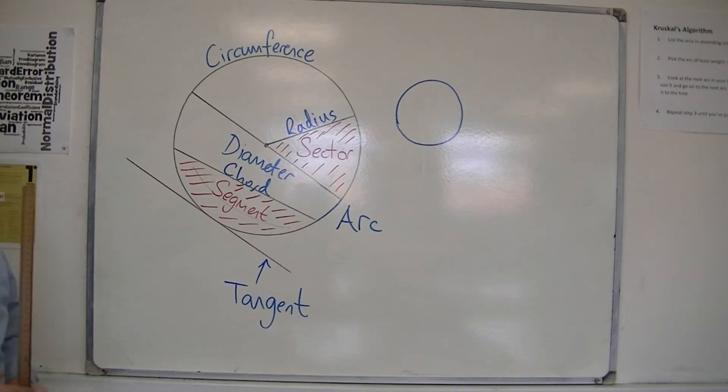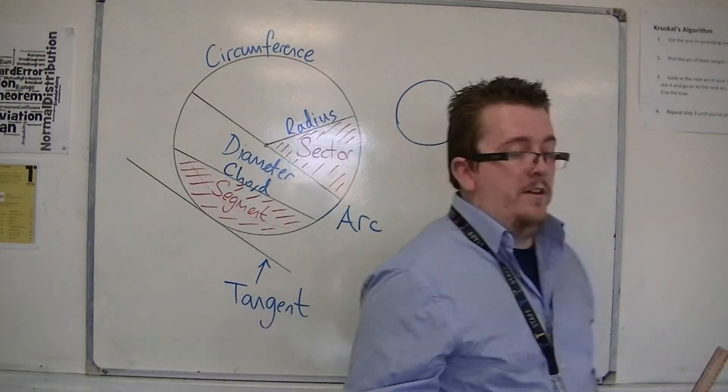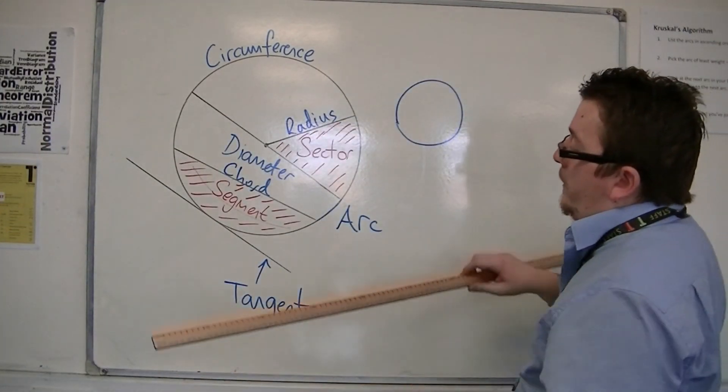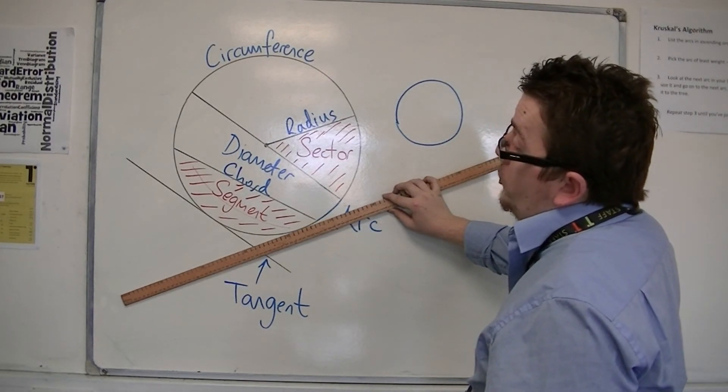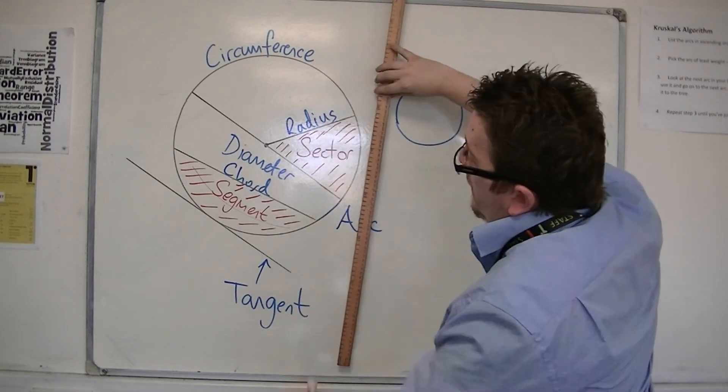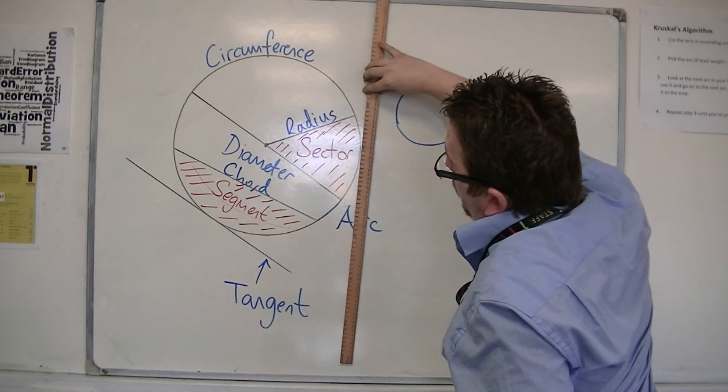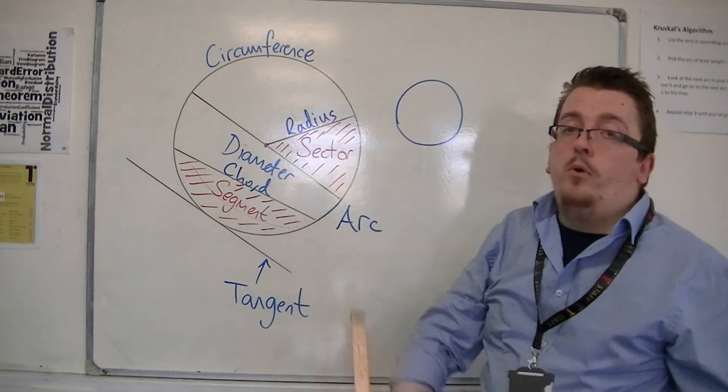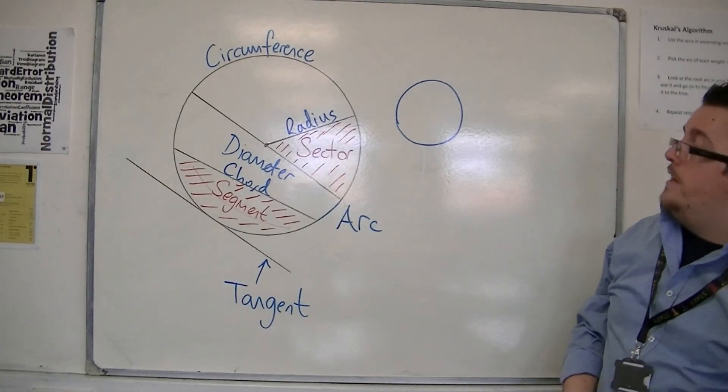So if you're required to draw a tangent line, just make sure that the line that you draw just brushes the circle at one point. And make that very clear when you draw it.